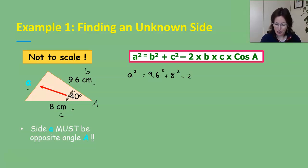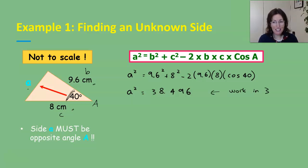Then we subtract 2. This time around I'm going to put them in brackets, and you can use brackets when you put it in your calculator as well. So b is 9.6, c is 8, and then another multiply by cos of A and that is 40. Making sure your calculator is in degrees, working that out and we get 38.496.